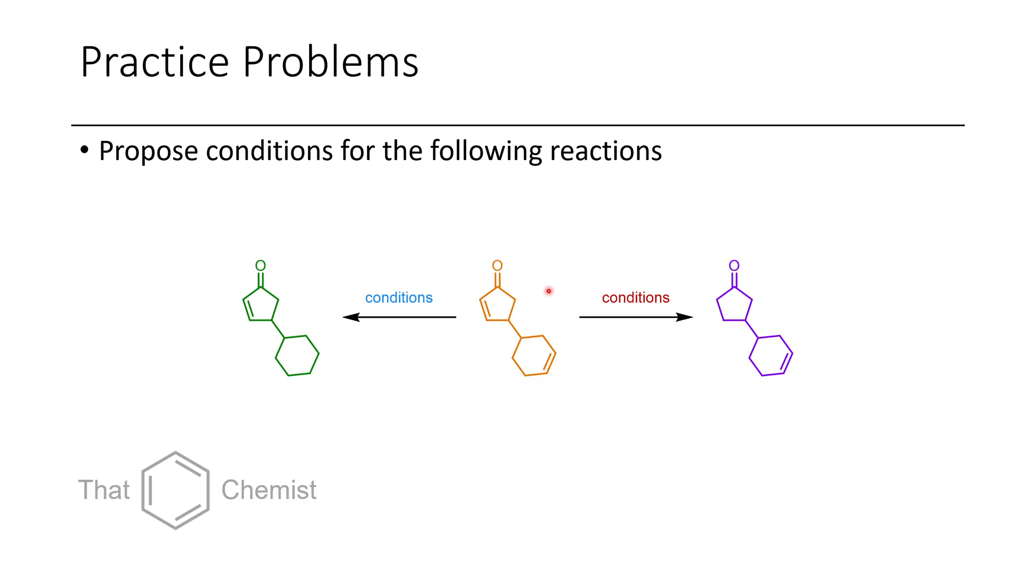So in this first problem, I ask you to propose conditions that would give you the reduction on the cyclohexane, as well as the reduction on the cyclopentene. Now this is a Michael acceptor, and the other alkene here is not a Michael acceptor. This is just a typical alkene, so we're going to want to use different conditions for each.